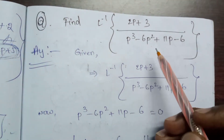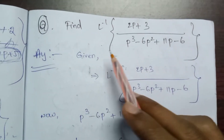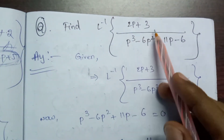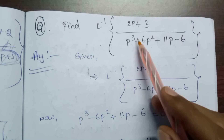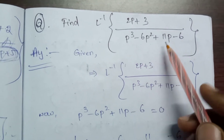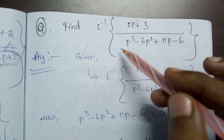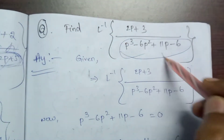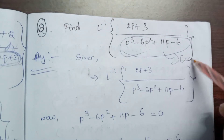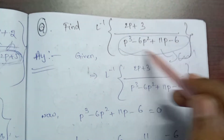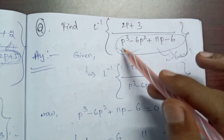Next problem. Find the inverse Laplace transform of (2p + 3) divided by (p³ - 6p² + 11p - 6). This is in cubic form.